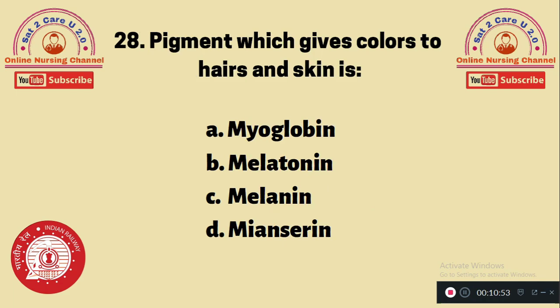Question 28: The pigment which gives color to hair and skin is — A. Myoglobin, B. Melatonin, C. Melanin, D. Mianserin. The answer is option C — melanin. Myoglobin is a protein, melatonin is a neurotransmitter, and mianserin is an antidepressant drug.